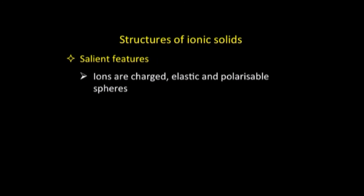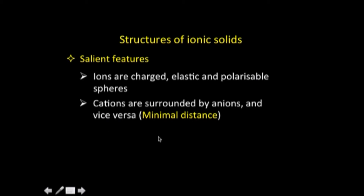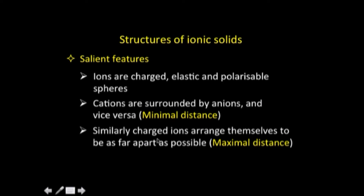Let us look at the salient features of ionic solids. The first is that ions are taken to be charged, elastic, and polarizable spheres, and cations are surrounded by anions and vice versa. In any ionic solid, cations will be surrounded by anions and anions in turn by cations, because that is how electroneutrality is maintained. The opposite charges will have minimal distance between each other, while similarly-charged ions — anion-anion or cation-cation — will arrange themselves as far apart as possible for stability reasons.